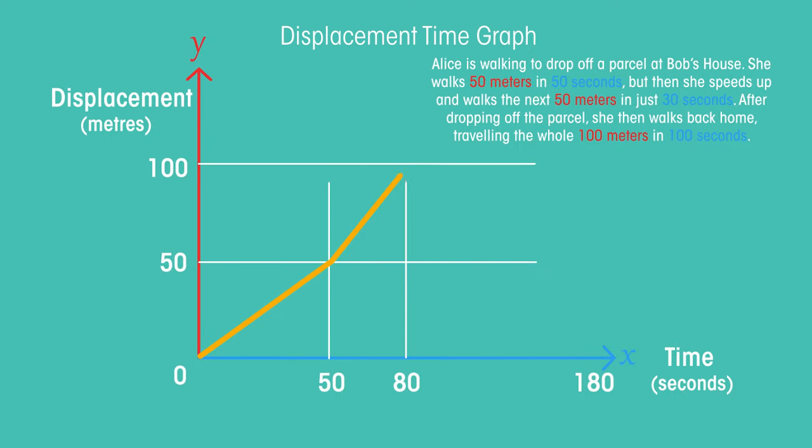Did you get it right? 50 metres in 50 seconds is this diagonal line, then 30 seconds and another 50 metres, then 100 seconds to walk all the way home again. Did you label your horizontal and vertical axes correctly with units?